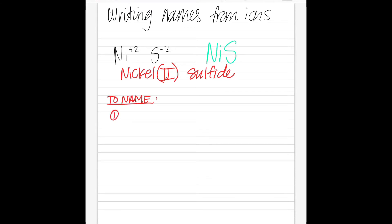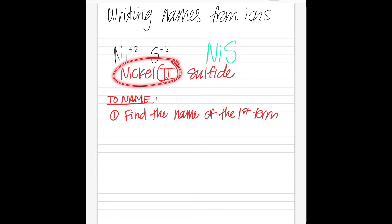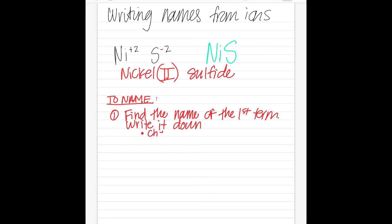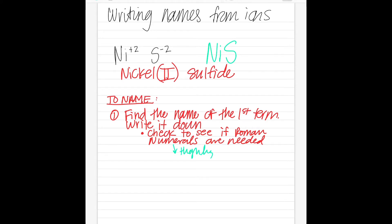Here are the steps for writing a name. Step one: find the name of the first term, which is what we did - we found the name of the first term and wrote it down. There is an extra bullet point under step one: check to see if Roman numerals are needed. How you know if you need Roman numerals - they will be highlighted on your periodic table. If it's highlighted, you need a Roman numeral.